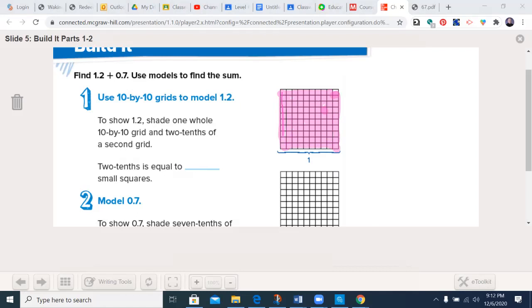So I have a whole one. And so 1.2, you shade one whole, and two tenths of a second grid. So a tenth is, here's one, here's two. Now to 0.7, I'm going to change my color just slightly.